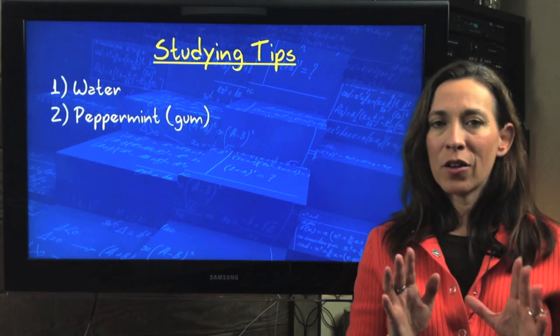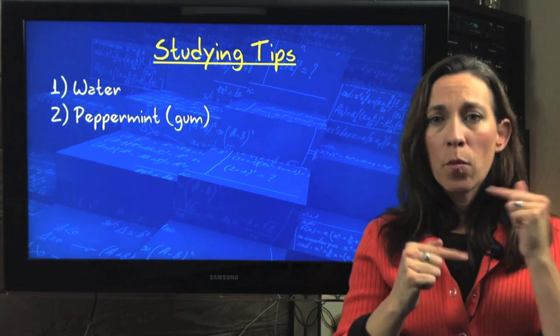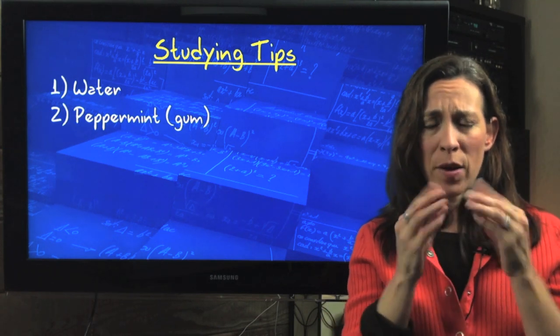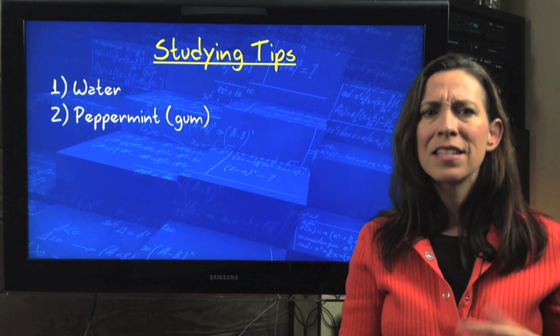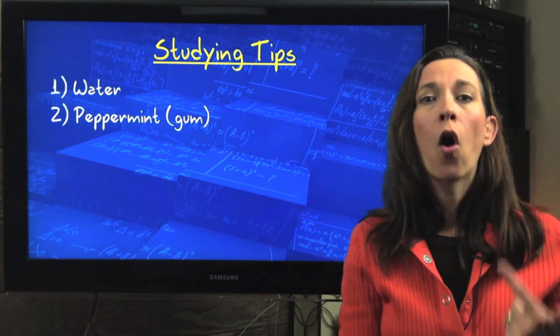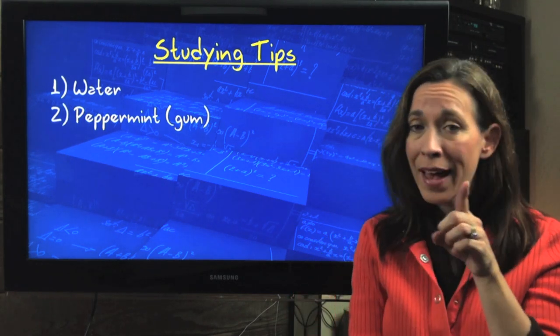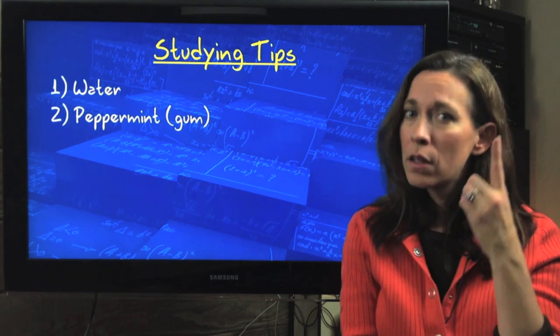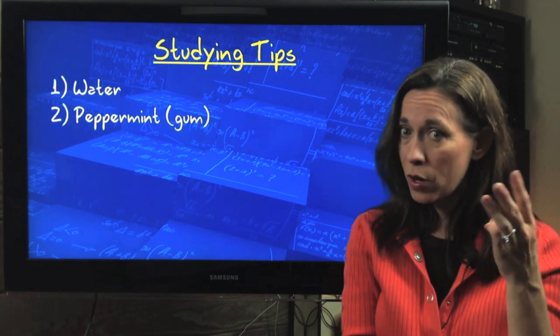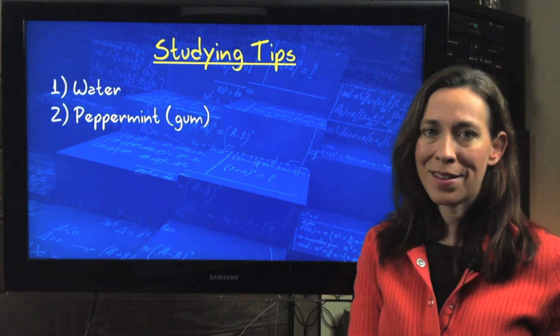So if you want to access information that's there, water. Also research has shown that peppermint helps. Gum. But I know a lot of places don't let you have gum. But chewing the gum but more importantly the fact that it's peppermint. Peppermint, the smell, the taste, it opens up the synapses and helps you to recall information that's in your brain. Now it has to be there to begin with. Hence, show up to class, take your notes, do your homework. But if it's there, peppermint helps you access it.